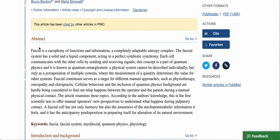In the abstract, the authors start off by saying fascia is a cacophony of functions and information, a completely adaptable entropy complex. The fascial system has a solid and a liquid component acting in a perfect symbiotic synchrony. Each cell communicates with other cells by sending and receiving signals. This concept is a part of quantum physics, and it is known as quantum entanglement. A physical system cannot be described individually, but only as a juxtaposition of multiple systems, where the measurement of a quantity determines the value for other systems.